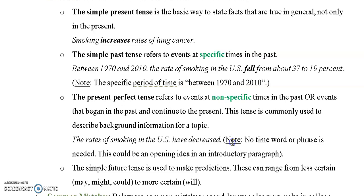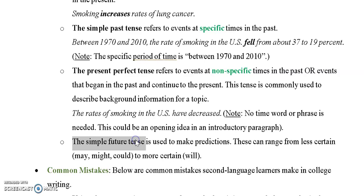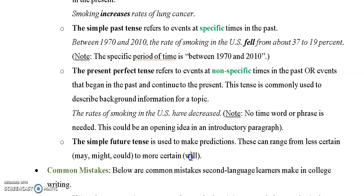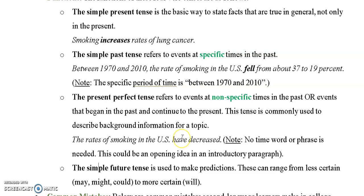The simple future tense is easier — used to make predictions. Keep in mind they can be less certain using may, might, could, versus will, which indicates high or complete certainty. These basic verb tenses constitute a very high percentage of what you need to control in your writing. Notice none of these are progressive tenses. So let's look at some common mistakes.